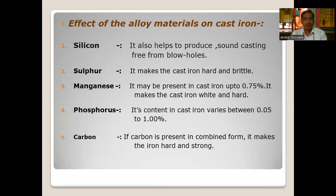The effect of alloying elements on cast iron: silicon helps produce sound casting free of blow holes. Sulfur makes cast iron hard and brittle. Manganese may be present up to 0.75% and makes cast iron white and hard. Phosphorus content varies between 0.05% to 1%. Carbon, when present in combined form, makes iron hard and strong.